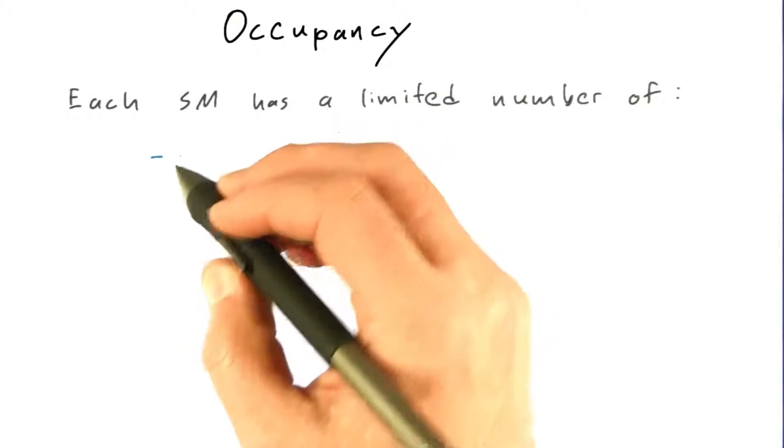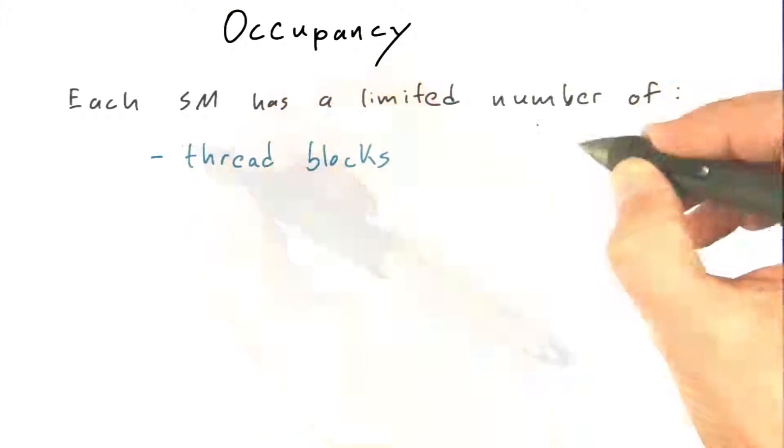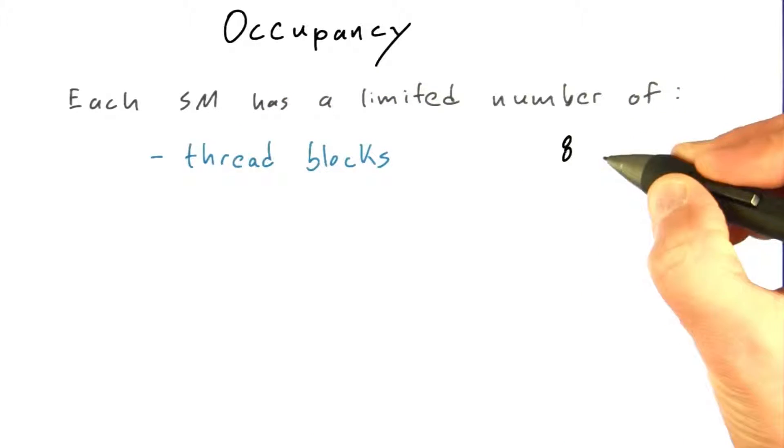Each SM has a limited number of resources. There's a maximum number of thread blocks allowed on an SM. It turns out to be 8 on current GPUs.